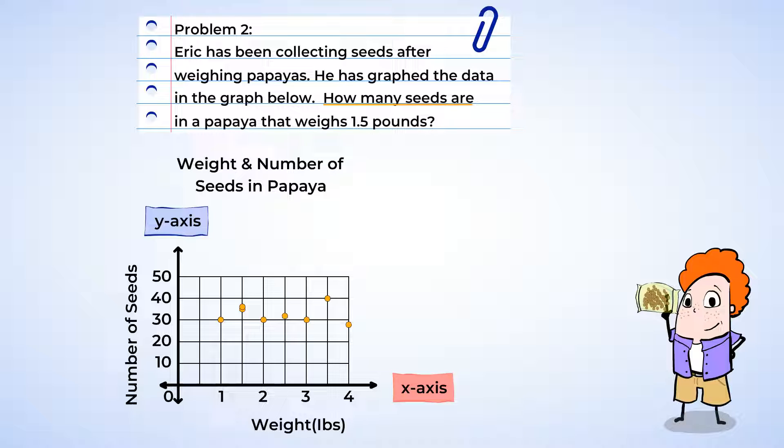Well, let's start by finding one and a half pounds along the x-axis labeled weight. And here we go, between one and two. And now we can follow the line up to see how many dots are on it. And there are two dots. And that means he had two papayas that each weighed 1.5 pounds.